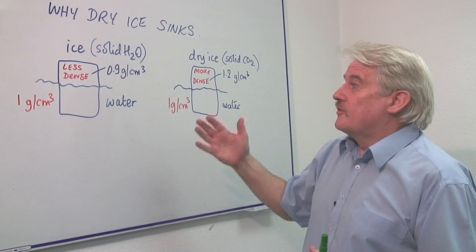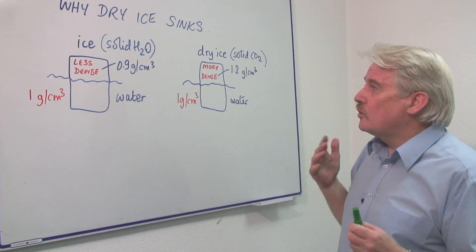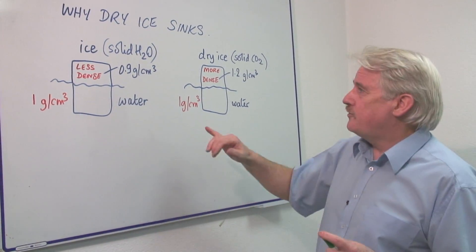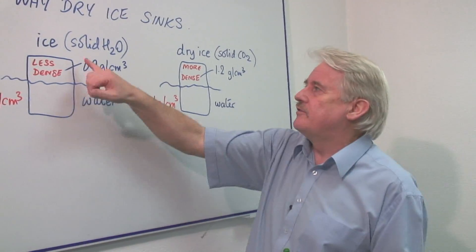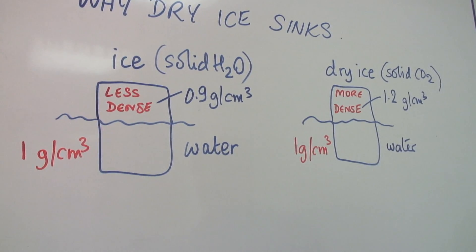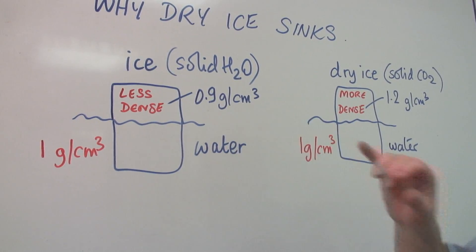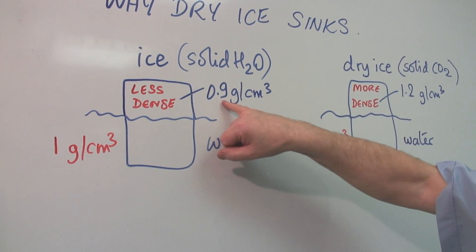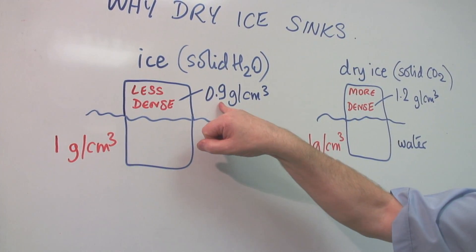So the trick is simple. If you look at the density, you'll find if you have a block of ice, solid water ice, and that block is a centimeter cube, it will have a weight of 0.9 grams or so.